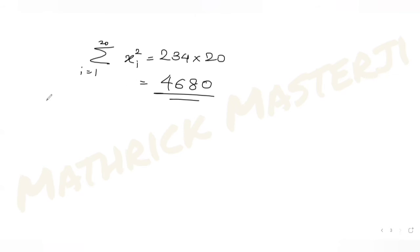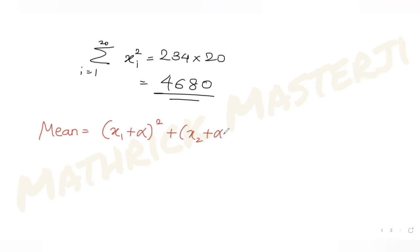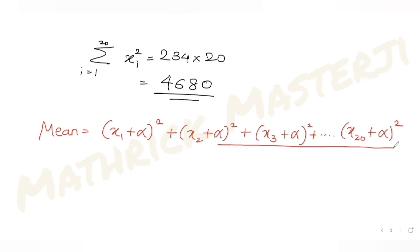Now the question tells us the mean of the other 20 observations — (x1+α)², (x2+α)², (x3+α)², and likewise till (x20+α)² — divided by 20, equals 178.